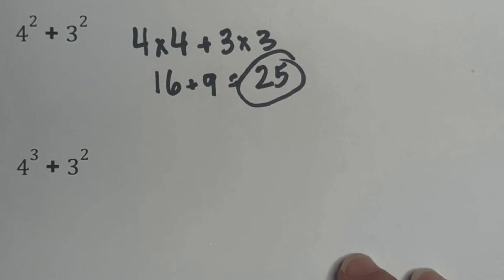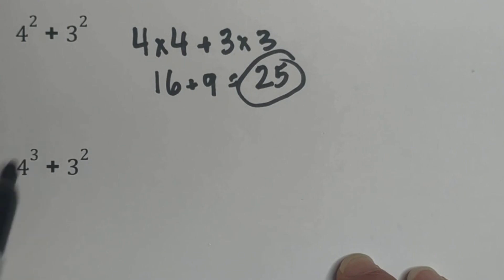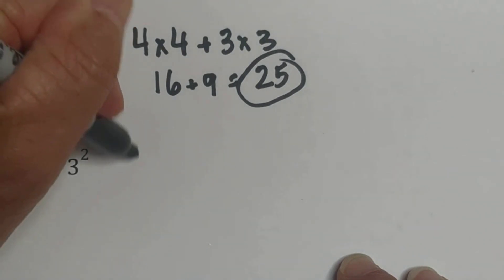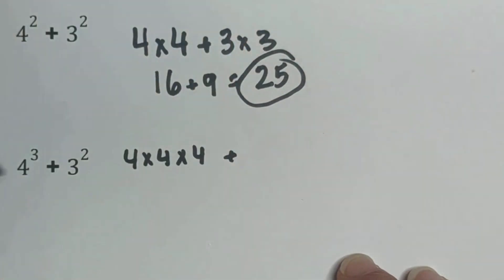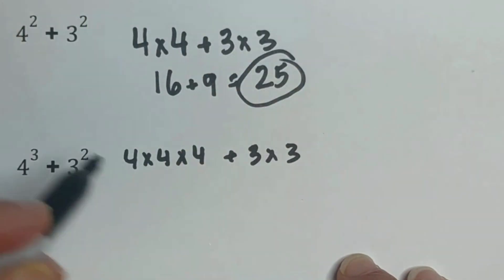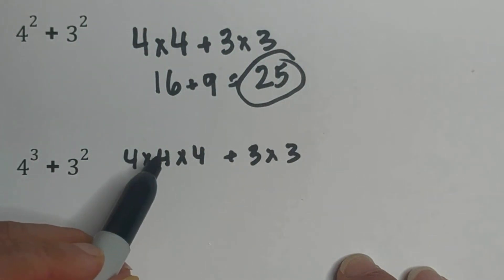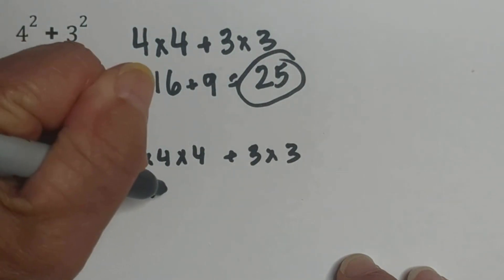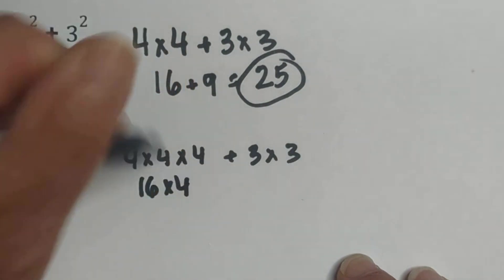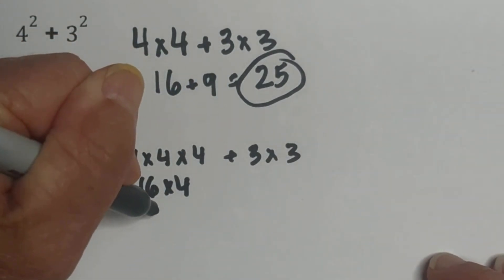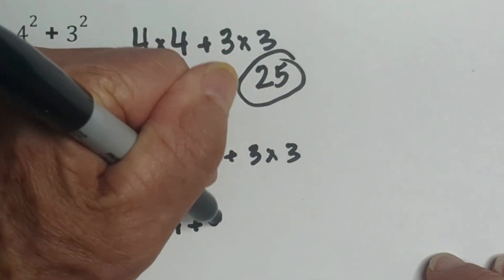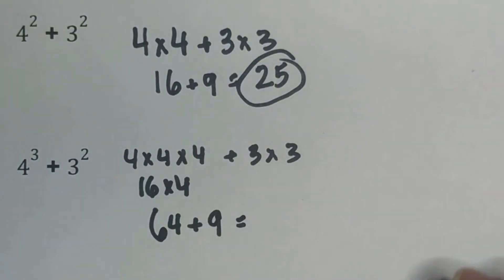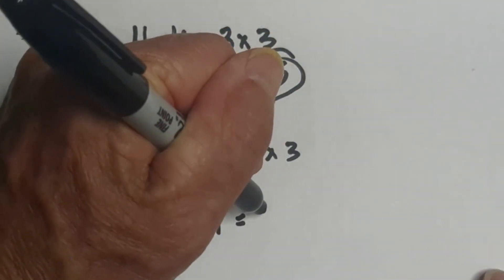Let's work this one. This one you have different bases and different exponents, so you have to work them individually. So it would be 4 times 4 times 4 plus 3 times 3. That is 16 times 4, which is 64, plus 3 times 3 is 9, so that equals 73.